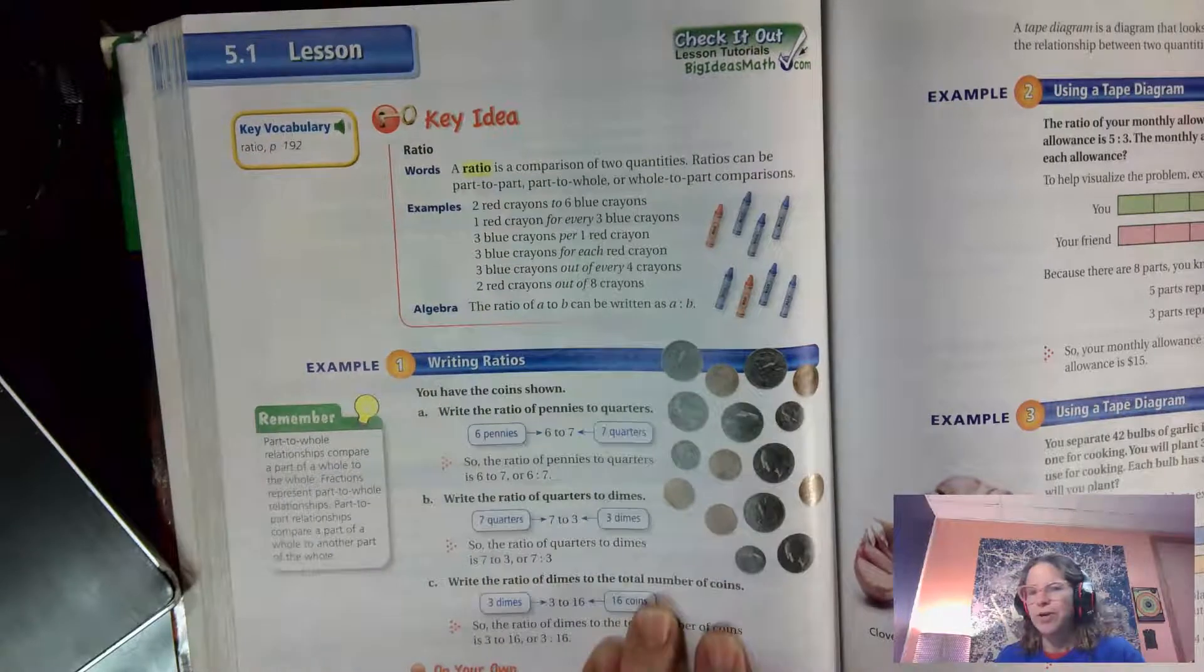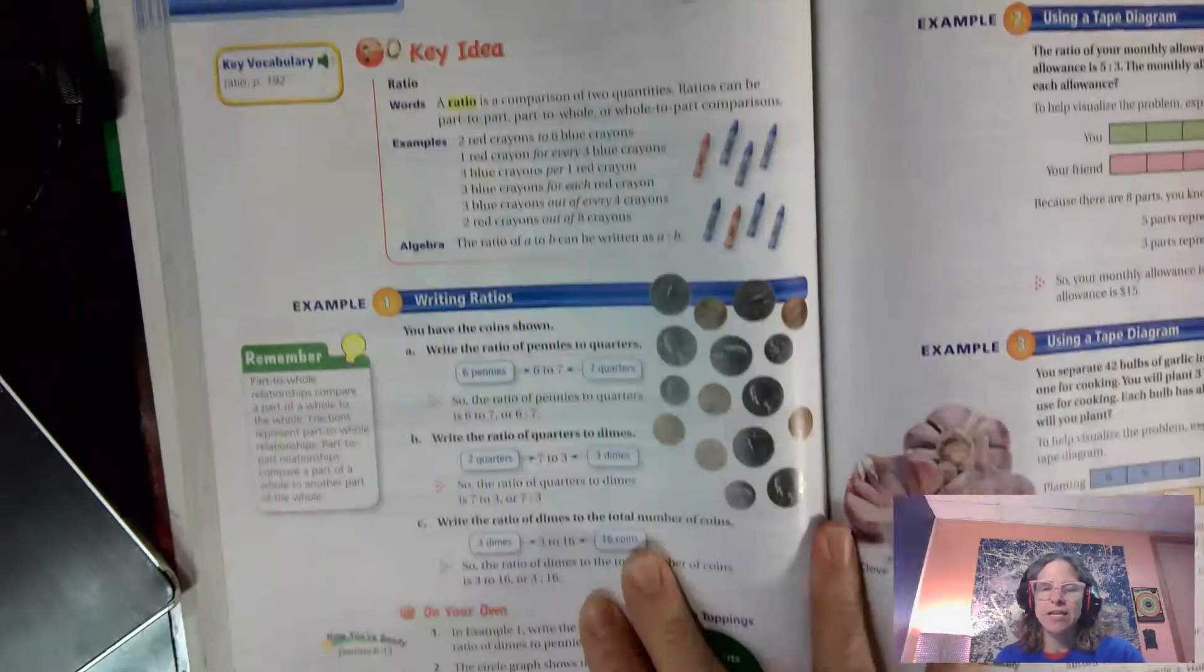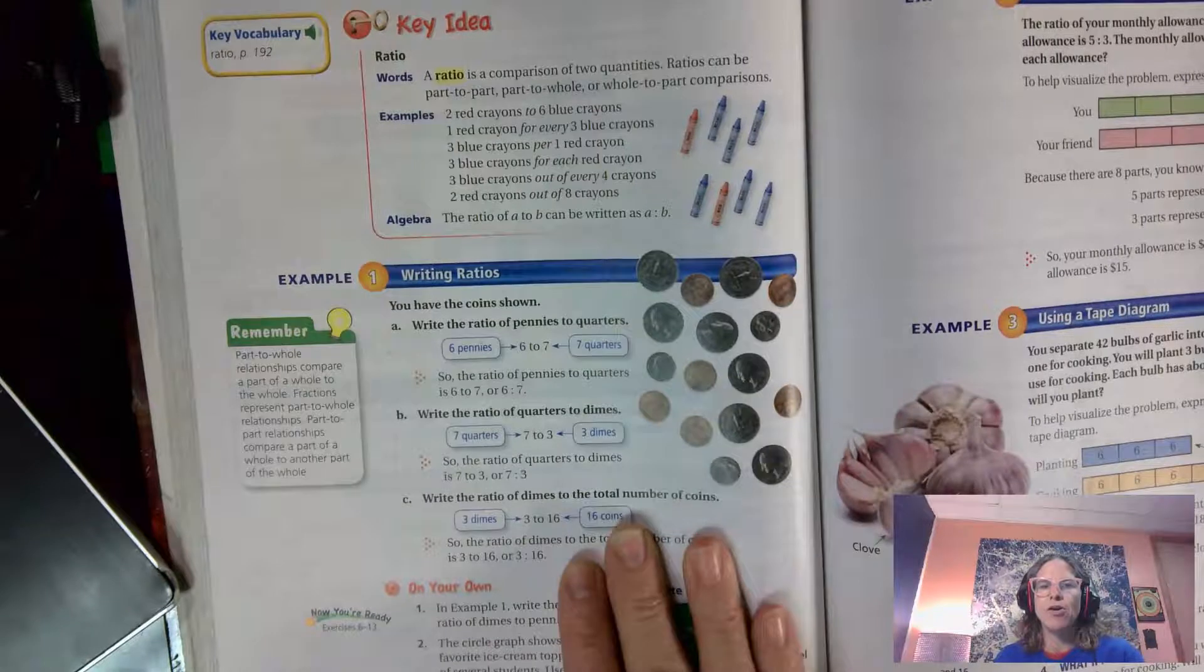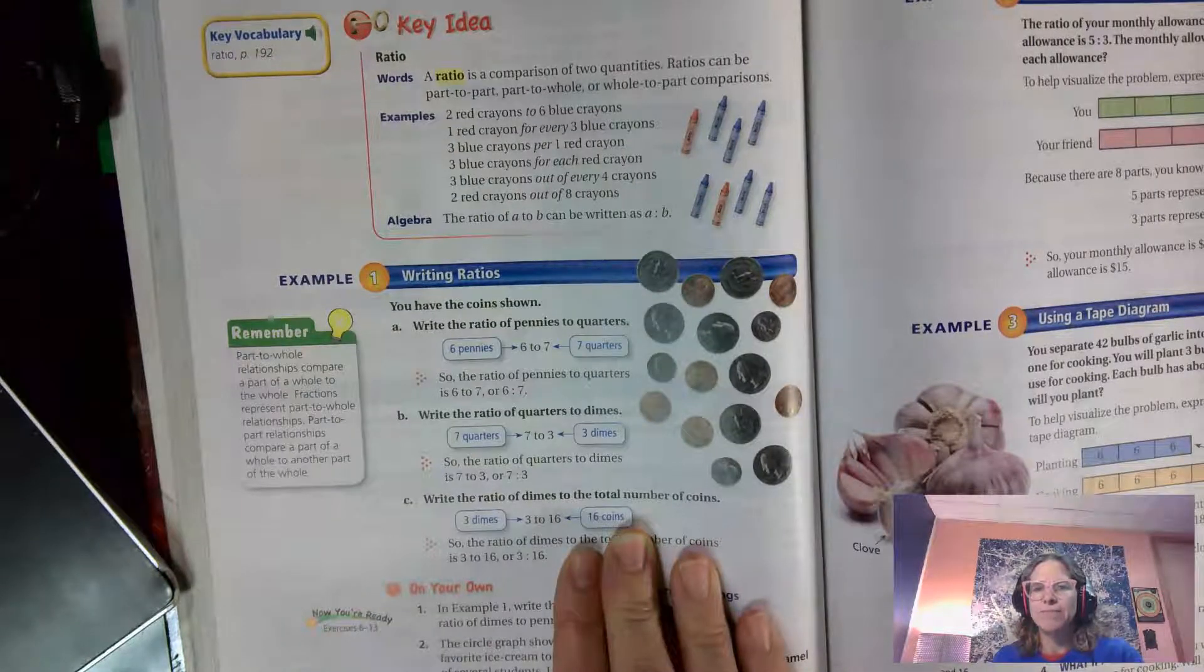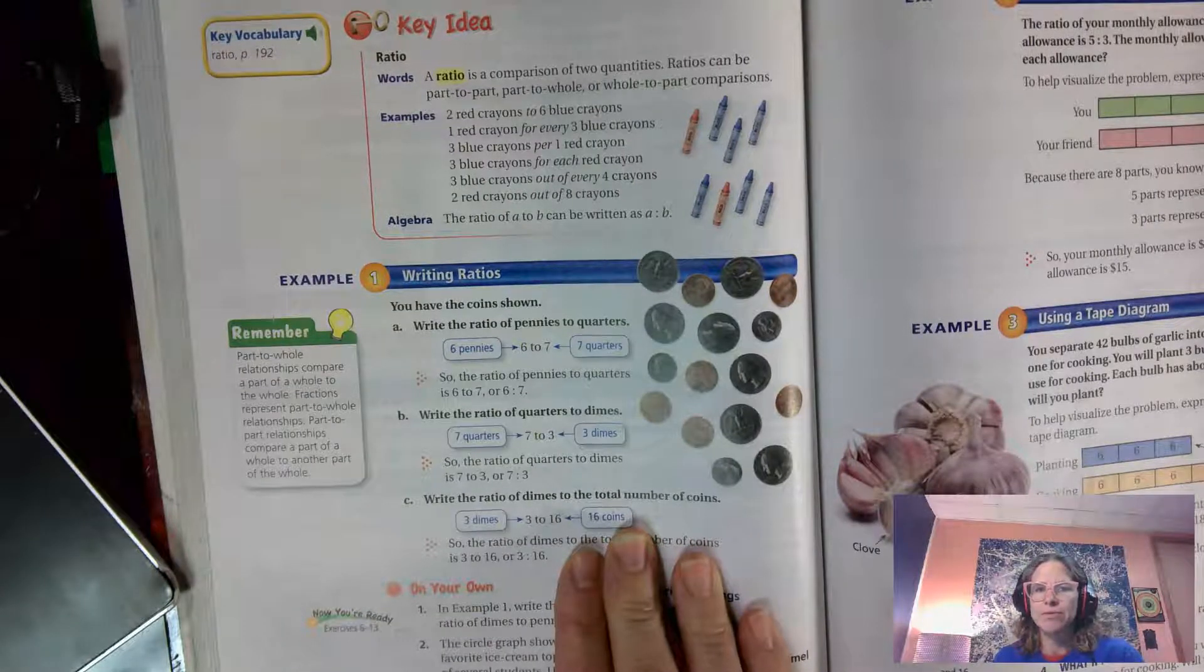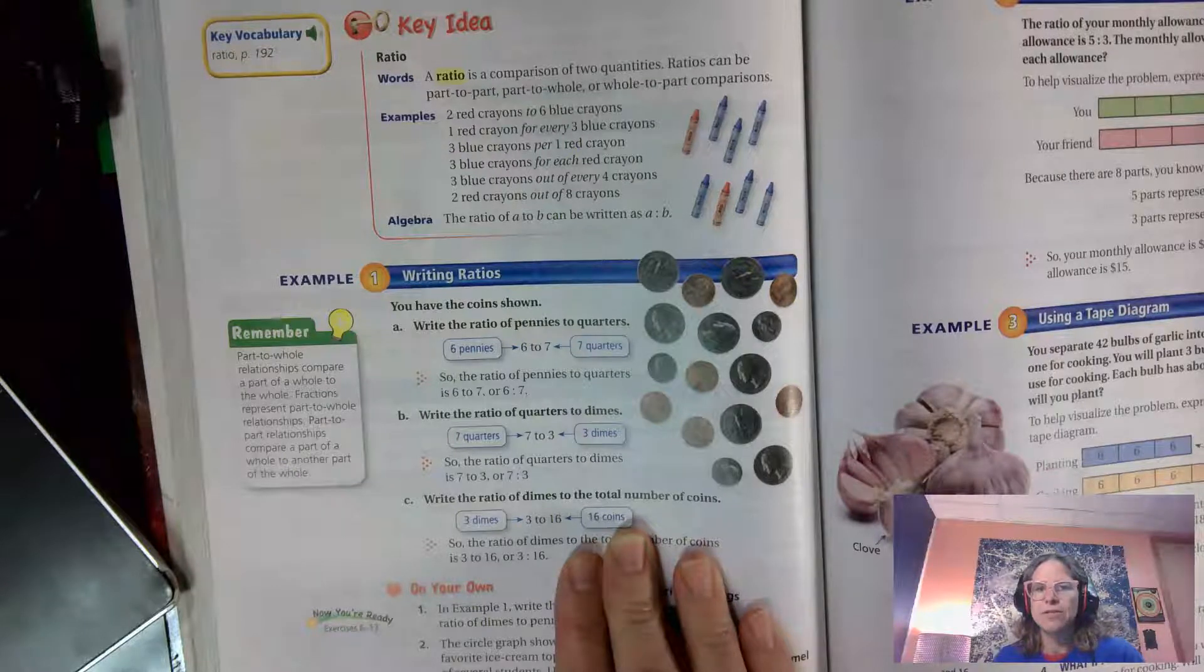Here was our coin example. Did anybody look through coin jars at home to see if they found pennies to quarters or quarters to pennies, quarters to total coins?